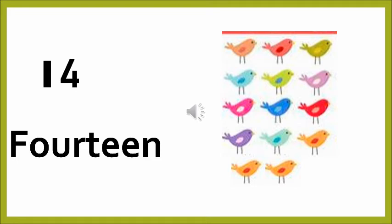The next one — the birds, all different colors of birds. Let's count: 1, 2, 3, 4, 5, 6, 7, 8, 9, 10, 11, 12, 13 and 14. Now let's know the spelling of 14: F-O-U-R-T-E-E-N. 14. We already know the spelling of 4 and we just added teen to it, so it becomes 14. The spelling becomes easy. So now let's say once more: F-O-U-R-T-E-E-N. 14. One last time: F-O-U-R-T-E-E-N. 14.